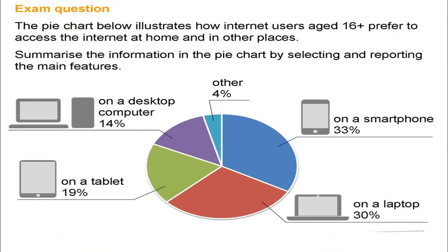Here we have another question. The pie chart below illustrates how internet users aged 16 and over prefer to access the internet at home and in other places. Summarize the information in the pie chart by selecting and reporting the main features. On a desktop computer it is 14%, on a tablet 19%, on a laptop 30%, and on a smartphone 33%. Four percent use other devices.